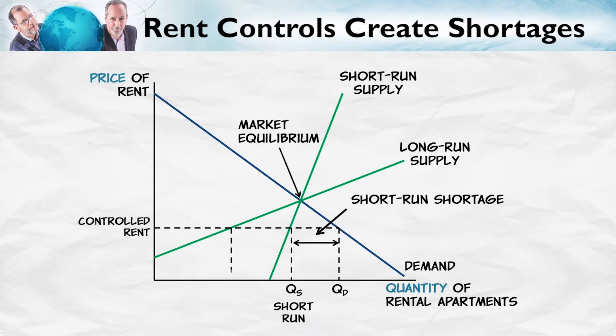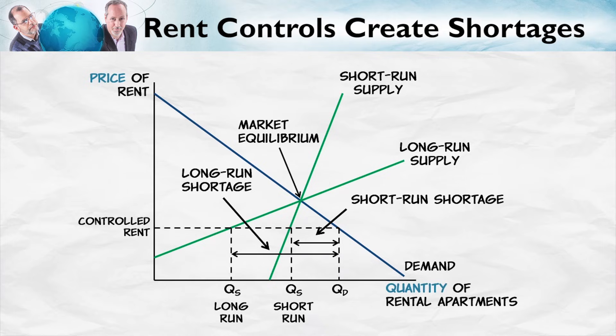In the long run, however, the supply is going to be much more elastic than in the short run, so the shortage will get much worse. In the long run, fewer apartments will be built, more apartments will be allowed to run down and become dilapidated and slowly go off the market. Apartments will be turned into condominiums. Instead of building apartments, people will build car garages or other types of housing. So in the long run, the shortage from rent control gets much worse than in the short run.